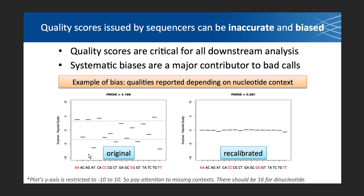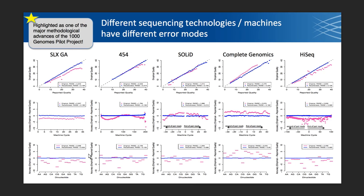Let's get into the details. This is a rather complicated slide — I will walk you through it. These are different sequencing technologies for each column, and there are three plots per sequencing technology. The top plot is basically a QQ plot, where we have empirical quality against reported quality. In pink, the pink indicates before recalibration, and the blue indicates after recalibration. When the pink line is below the blue line, it means the reported quality overestimated the quality of the bases and we want to lower them. When the pink line is above the blue line, we have underestimated the base qualities and we want to increase them.